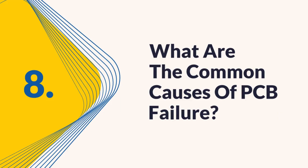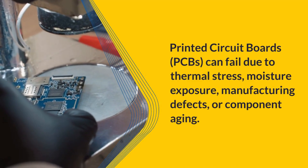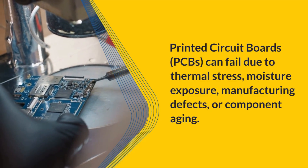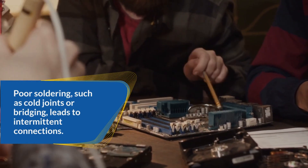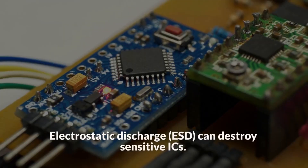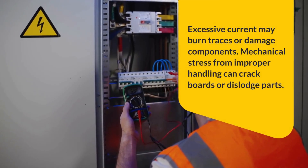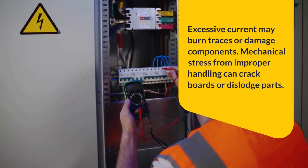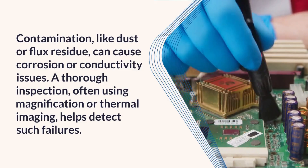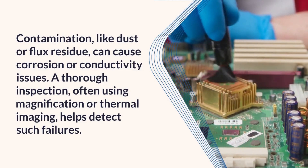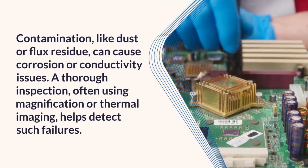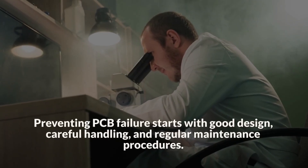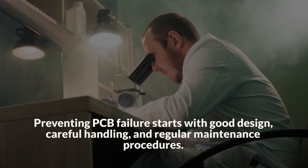Question 8: What are the common causes of PCB failure? Printed circuit boards (PCBs) can fail due to thermal stress, moisture exposure, manufacturing defects, or component aging. Poor soldering, such as cold joints or bridging, leads to intermittent connections. Electrostatic discharge (ESD) can destroy sensitive ICs. Excessive current may burn traces or damage components. Mechanical stress from improper handling can crack boards or dislodge parts. Contamination, like dust or flux residue, can cause corrosion or conductivity issues. A thorough inspection, often using magnification or thermal imaging, helps detect such failures. Preventing PCB failure starts with good design, careful handling, and regular maintenance procedures.